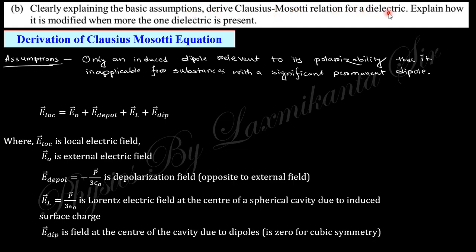Next question: Clearly explaining the basic assumptions, derive Clausius-Mosotti relation for a dielectric. Actually, the assumption is that only induced dipoles are relevant to the polarizability, and this is applicable for substantial significant permanent dipoles. You know, in the polarizability or polarization, there are three main factors: electronic polarizability, ionic polarizability, and dipolar polarizability. Here, the permanent dipoles are eliminated. If we neglect the permanent dipole or if we omit the permanent dipole, the dipolar moment due to electronic and ionization contributes in the Clausius-Mosotti relation. By Clausius-Mosotti relation, you actually neglect this permanent dipole which are calculated in the classical theory.